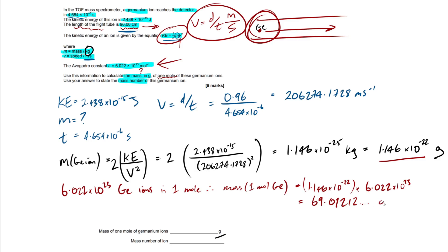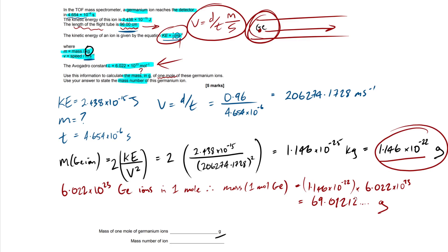That value is in grams, since we already converted. If you'd left it in kilograms, you'd just convert after. Now, how many significant figures? Looking at the data in the question — 4.654, 2.438, 96 — all four sig figs. So our final answer is 69.01 grams. The mark scheme also accepts just 69.